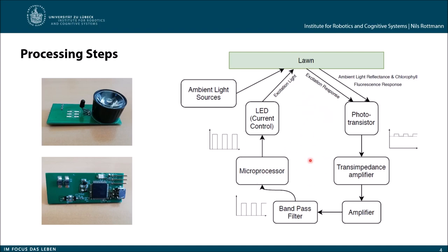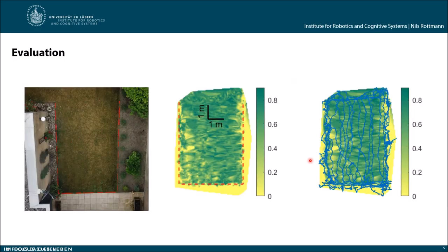Now let's have a look at our results. We evaluated our sensor on some lawn. We tested our sensor in a real garden environment by trying to detect the mowing area marked here with these red lines.